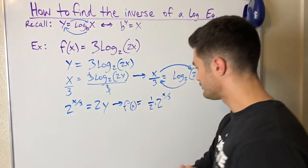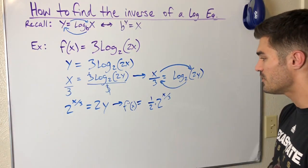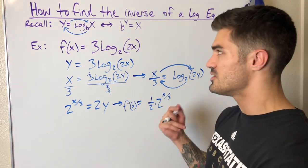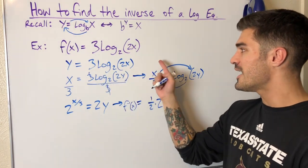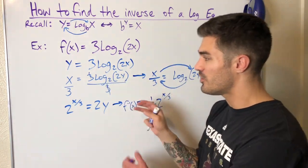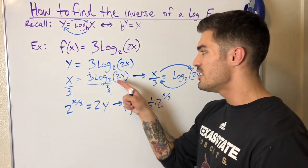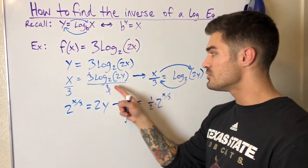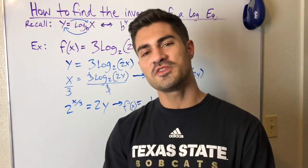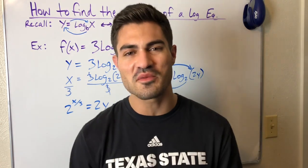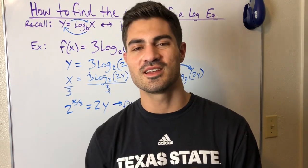There we go, we found the inverse of this logarithmic function. You can do this with just about any function using the same process. If there's stuff being multiplied or added and subtracted, you need to get rid of all that stuff, bring everything to the other side, basically isolate your log function, and then use your trick to convert it to exponential form and solve for the inverse. Hope this video helped. Hit like, hit subscribe if it did. Check out my channel for more videos and keep flexing those brain muscles. I'll see you next time.